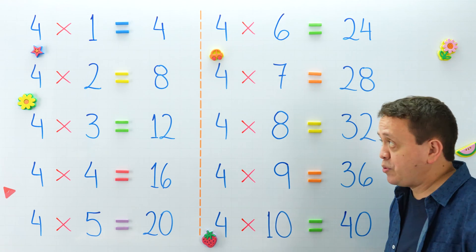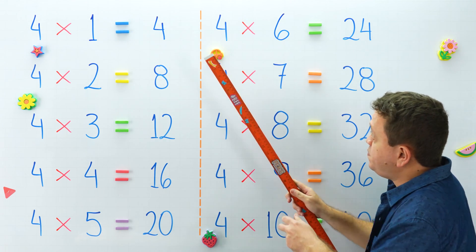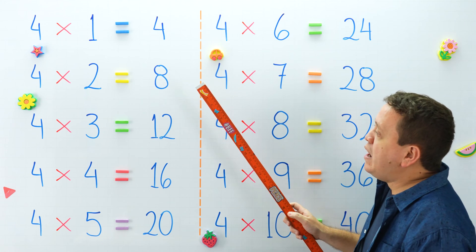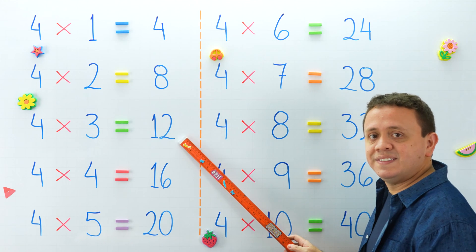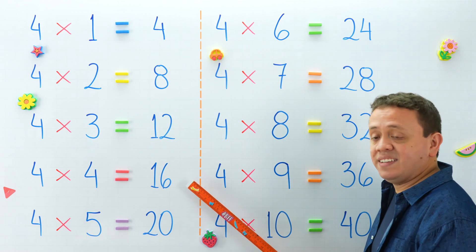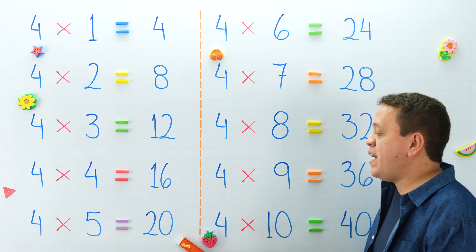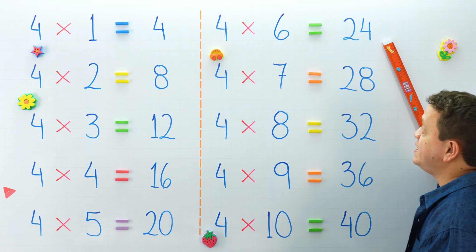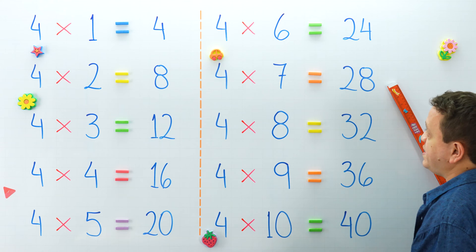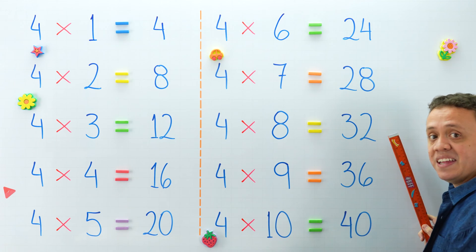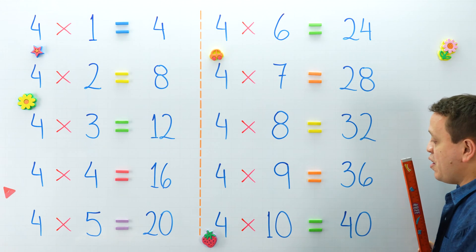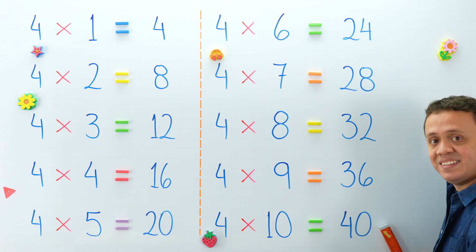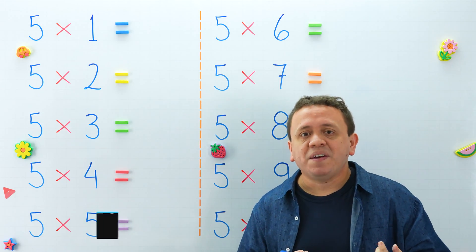Let's check our products. 4 times 1 is equal to 4. What is 4 times 2? And 4 times 3 is equal to? 4 times 4 equals? And 4 times 5 equals? This side, 4 times 6 equals? 4 times 7 equals? 4 times 8 equals? 4 times 9 equals? One more please, 4 times 10 equals? You got it.